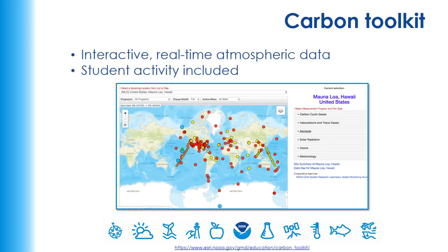Another great resource is the Carbon Toolkit. This is an interactive, real-time atmospheric data set. This is the data source of the Keeling curve of carbon dioxide in the atmosphere over time, and there's a great student activity related to this data.